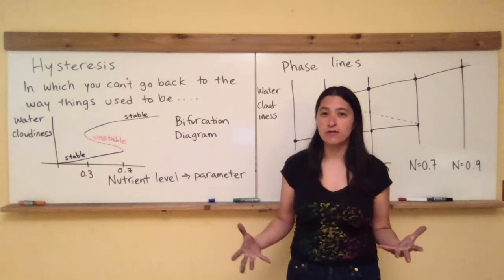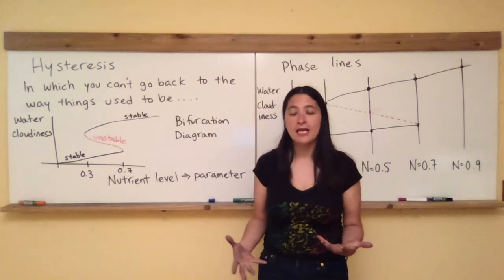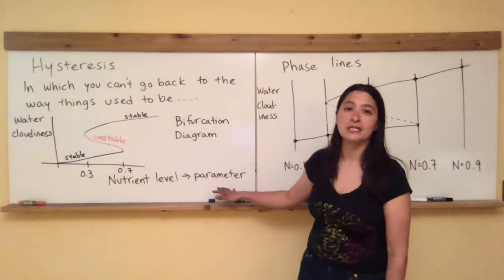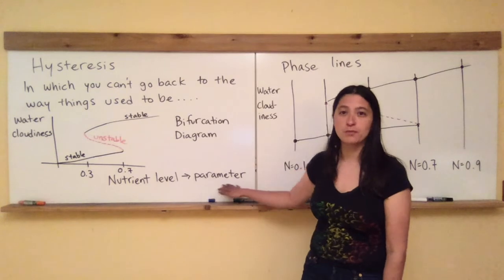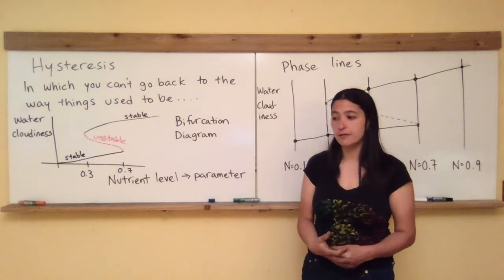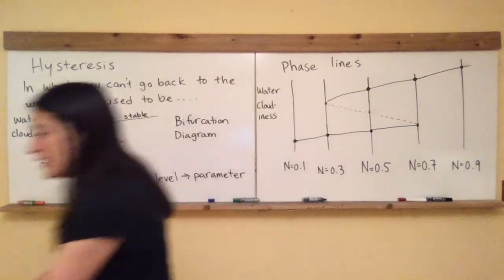The idea is that we have some sort of beautiful pristine pond and the cloudiness of the water in that pond depends on the nutrient level, which is the parameter we're varying of that system. Okay, so I'll walk you through the bifurcation diagram first. This is the same that we have here.